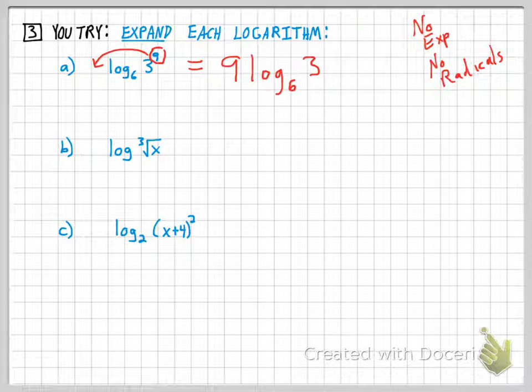Try the next one. All right, and this one: your cube root of x is really a power of one-third, so this one becomes one-third log of x. Okay, again, we're thinking of that radical as an exponent.